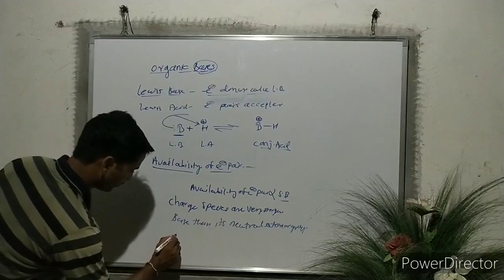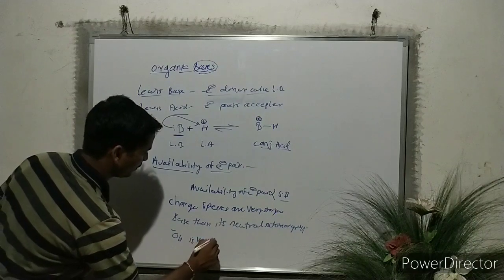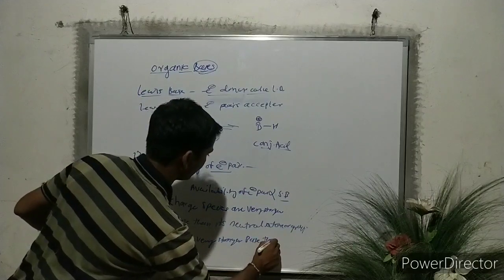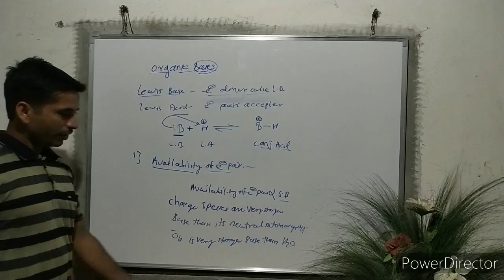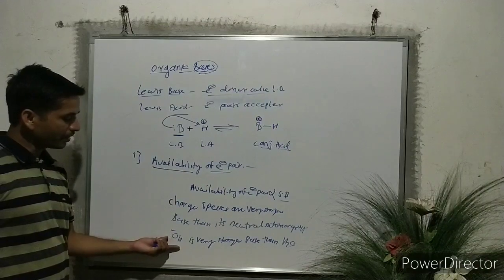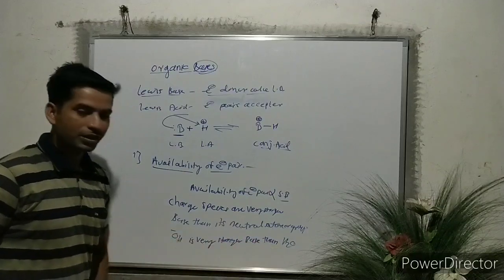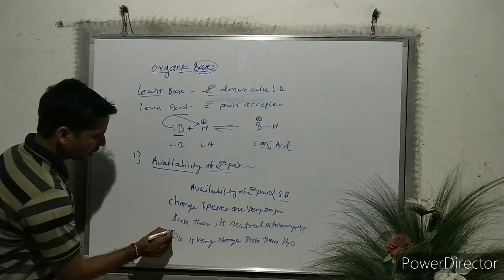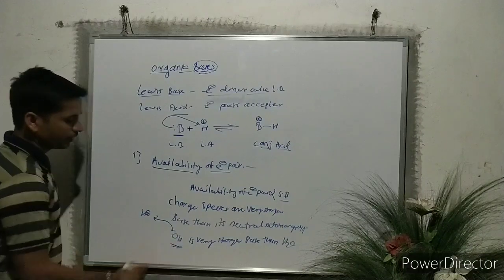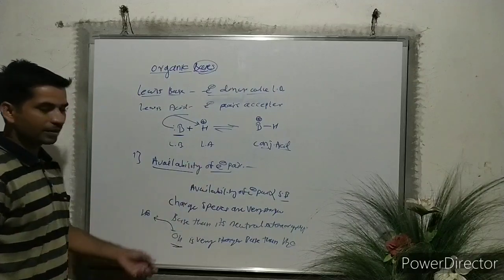OH⁻ is a stronger base than H₂O because H₂O is a neutral molecule while OH⁻ is a negatively charged species. The negative charge on OH⁻ can be easily made available for donation. Therefore, OH⁻ is a stronger base than its neutral molecule H₂O. So availability of electron pair decides the strength of the base.